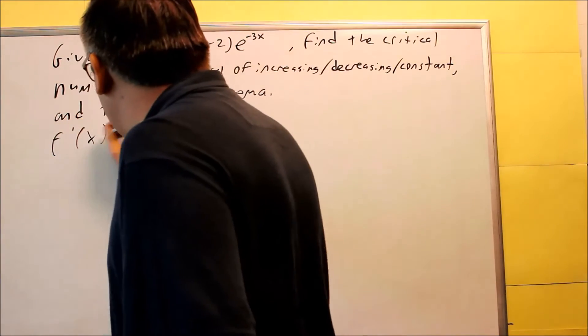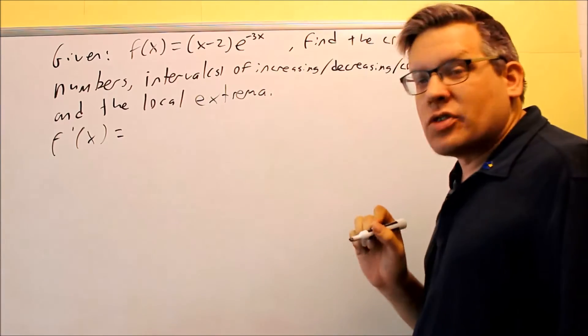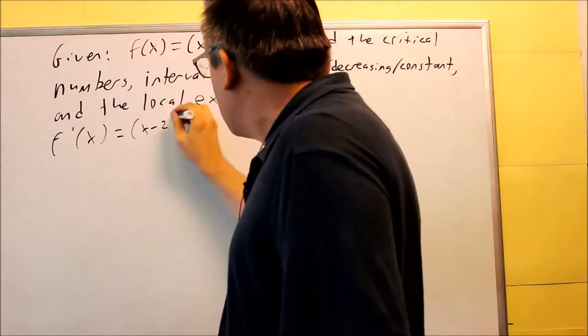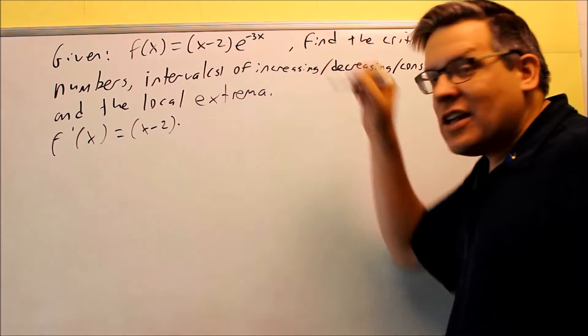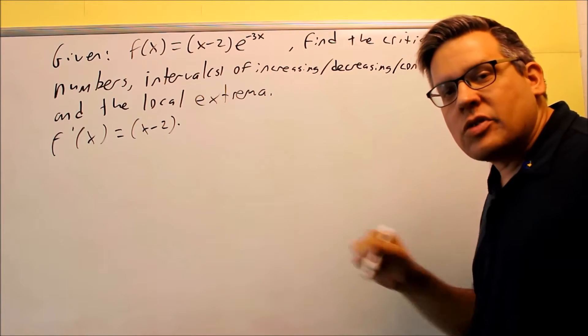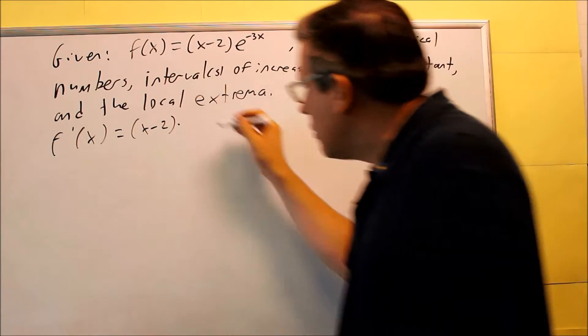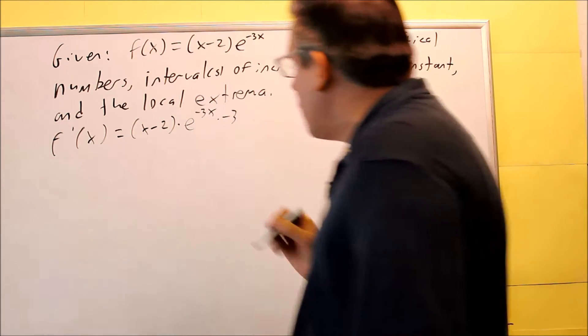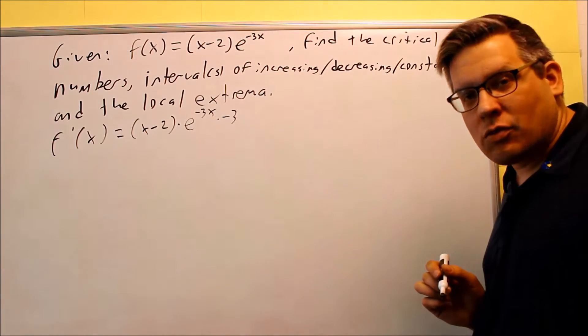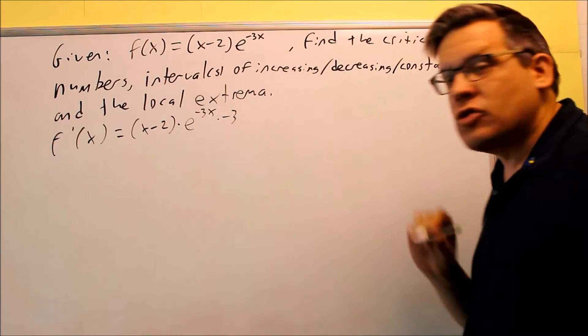So when we do that, we have the first piece is x minus 2. So we have the first thing, and then times the derivative of the second. This is e to the u. Derivative of e to the u is e to the u times u prime. So that's e^(-3x) times the derivative of the exponent, and that's going to be times negative 3. So e to the u times u prime.